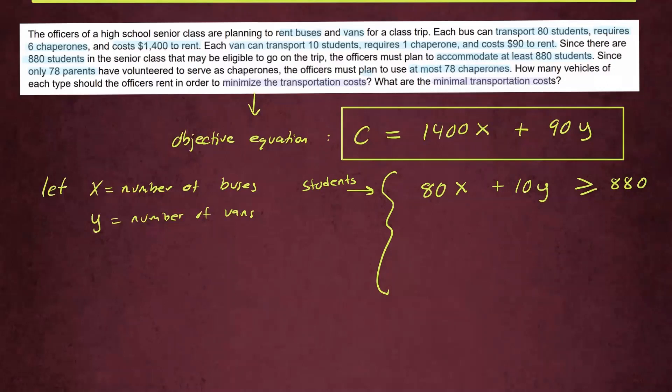For the first statement, we see it requires 6 chaperones for the bus, so we have 6 times X. Plus for the van, it requires 1 chaperone, so we just need 1Y. And since there are 78 parents volunteered, the officer must plan to use at most, so you can use less, but the maximum you can use is only 78. So that will be less than or equal to 78 chaperones.